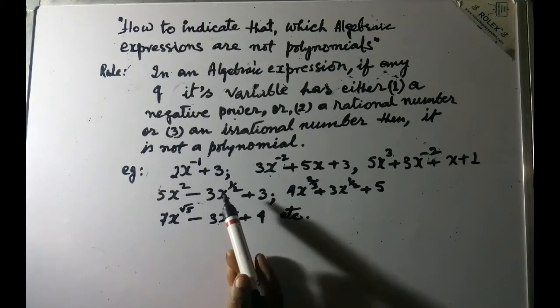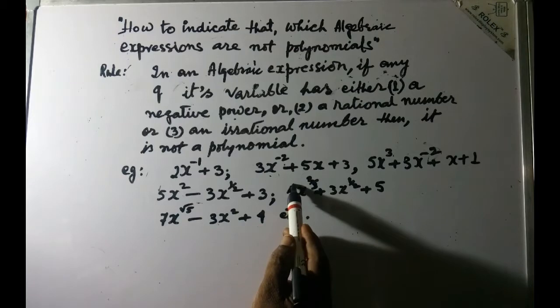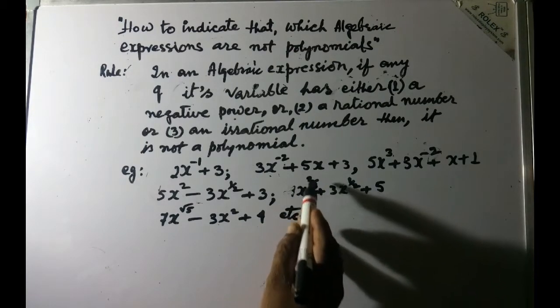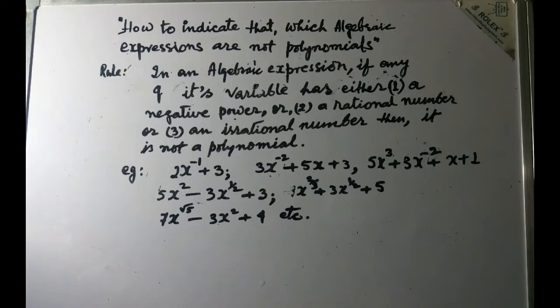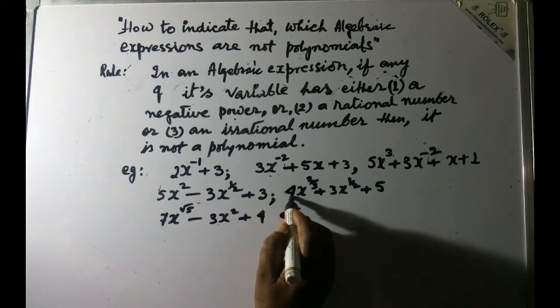Why? Because one of its variables is having a power which is a rational number. Here also 4x to the power of 2 by 3, so you see if the power is 2 by 3, 2 by 3 is a rational number, so we cannot consider this expression to be a polynomial.